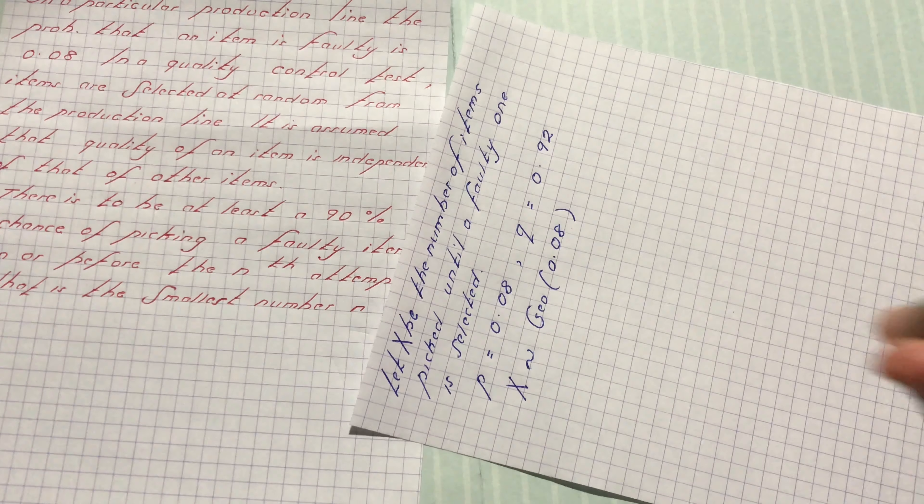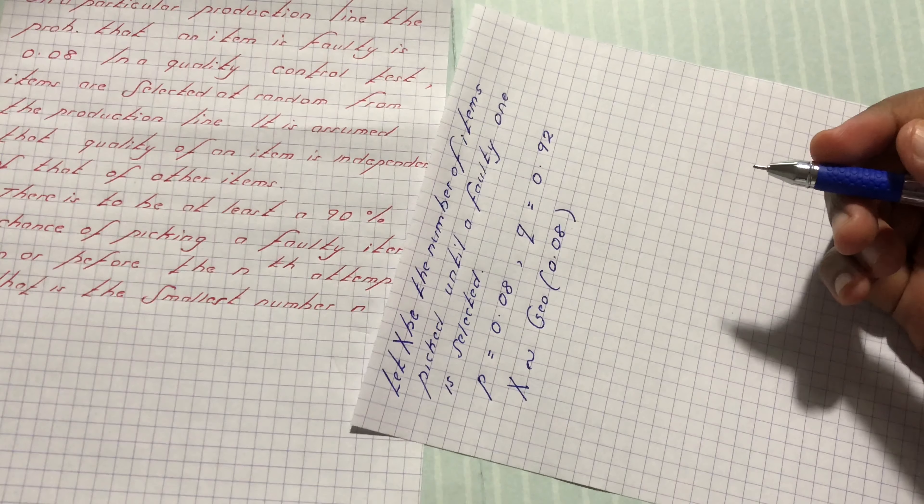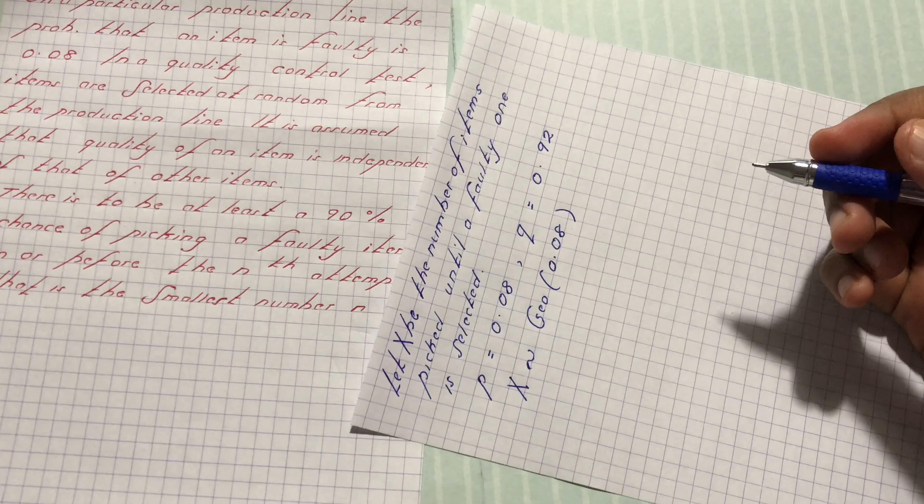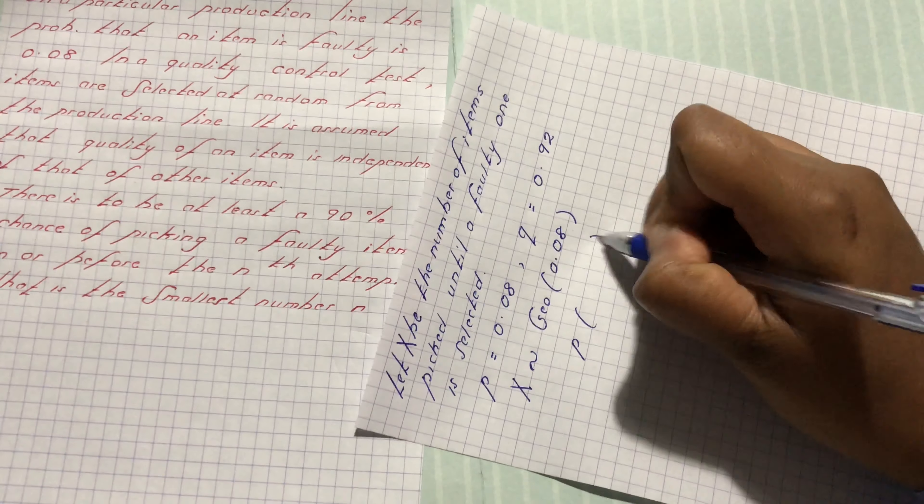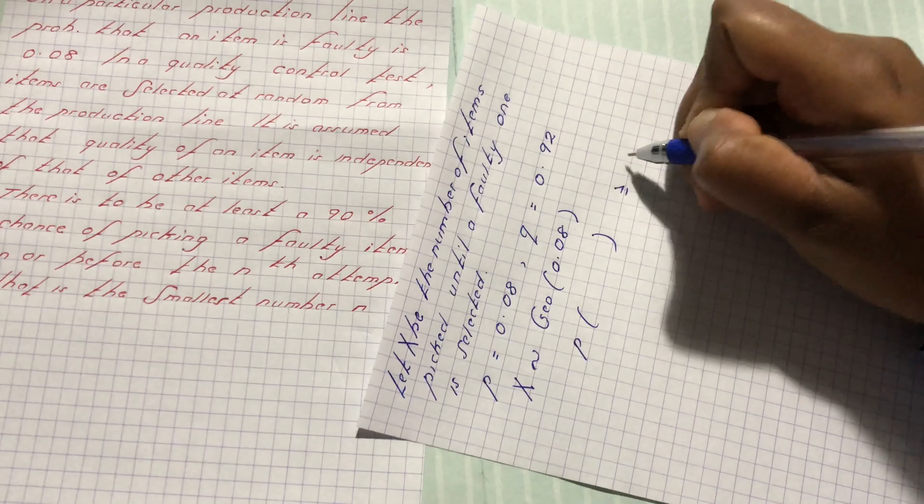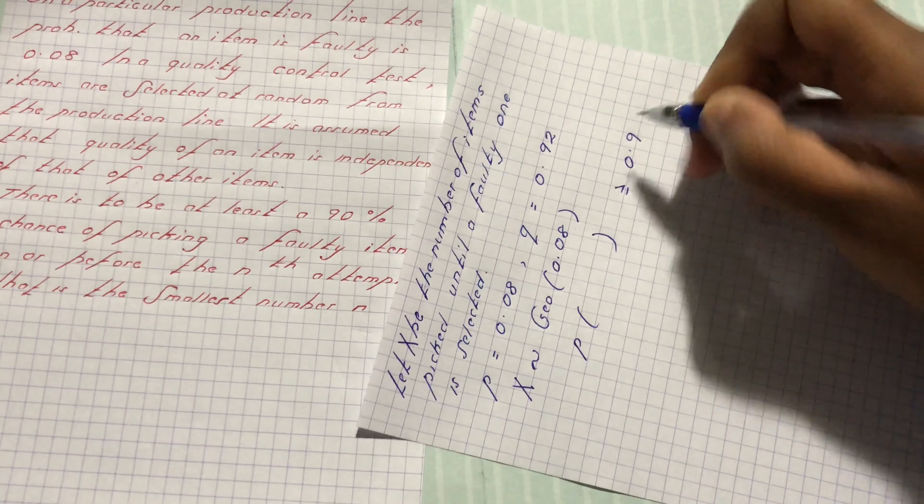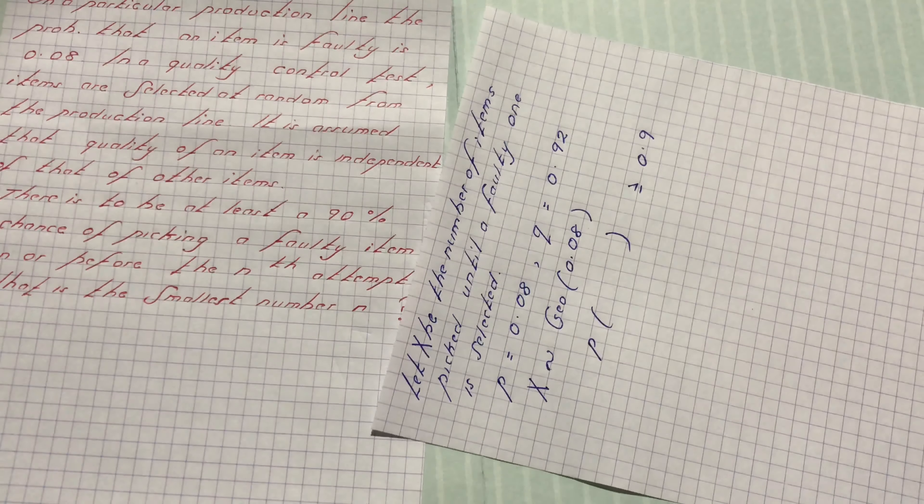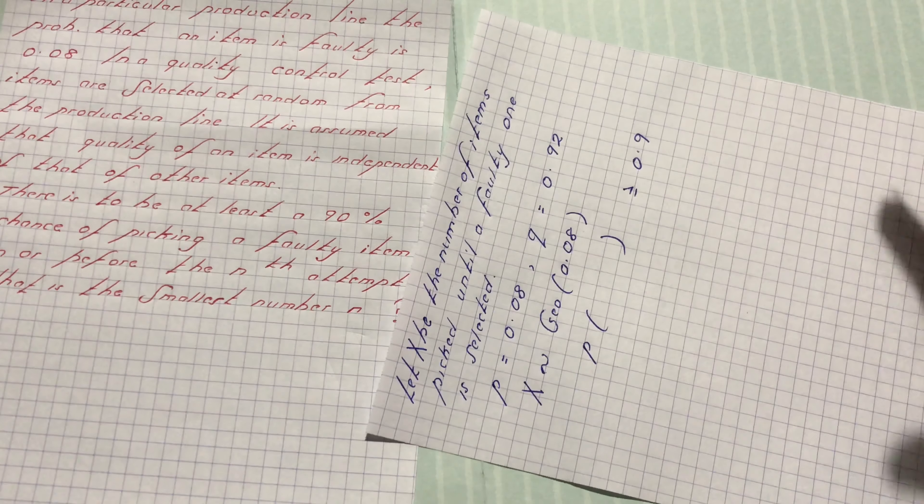So there is to be at least a 90% chance. So at least a 90% chance. So there is a probability of what? At least a 90% chance which is 0.9 of picking a faulty item on or before.